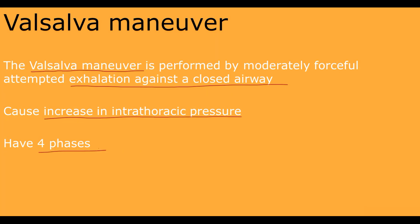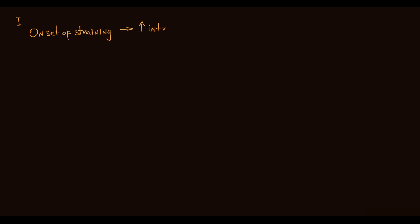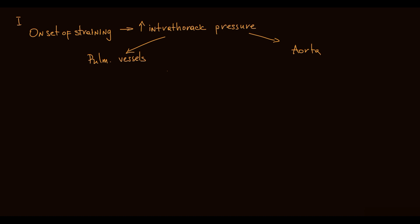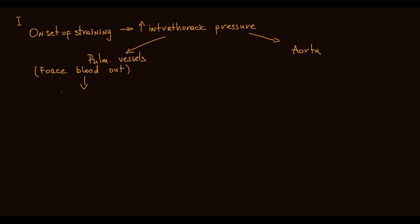The Valsalva maneuver has four phases based on hemodynamic changes. Initially, forceful exhalation causes onset of straining that results in an acute rise in intrathoracic pressure. This pressure is applied to pulmonary vessels and the aorta. Pulmonary vessels include pulmonary arteries and veins, and we will refer to them collectively as pulmonary circulation. This rapid increase in intrathoracic pressure forces blood out from pulmonary vessels to the left atrium, increasing systemic venous return.